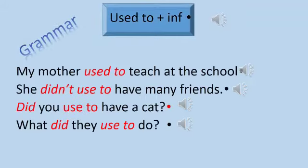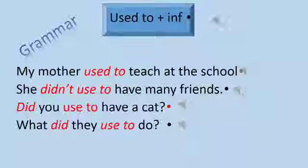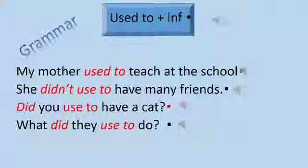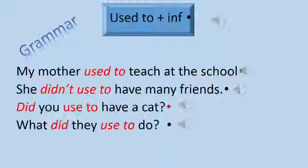Used to plus infinitive. We use this form to talk about actions that happened in the past but don't happen now, or to talk about facts that were true in the past but aren't true now. If you want to talk about your past habits that you don't do now, you use this form. We put used to plus infinitive verb. For example, my mother used to teach at the school. This sentence means that my mother in the past when she was young was working as a teacher, but now she doesn't.